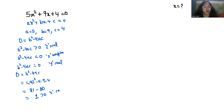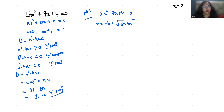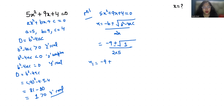Let's find out the solution. In Method 1, I am going to use the quadratic formula. Applying the formula gives us minus 9 plus or minus 1, divided by 10.